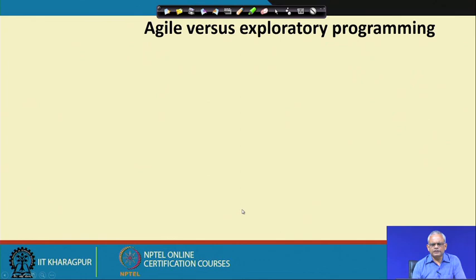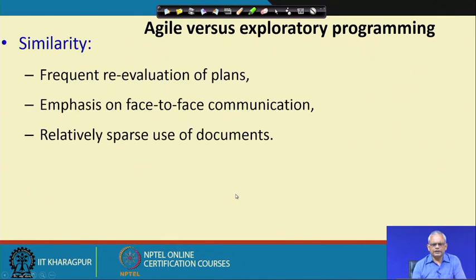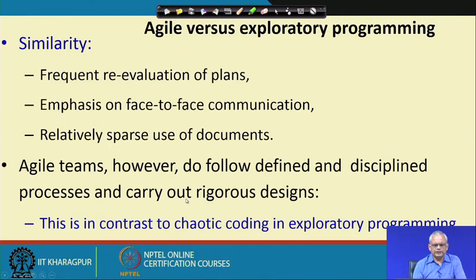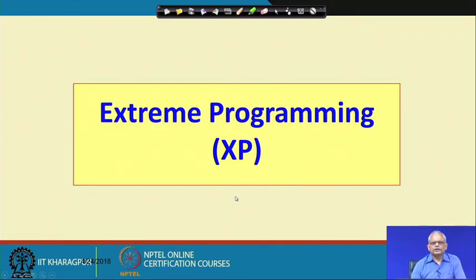Compared to exploratory programming, Agile has many similarities — face-to-face communication, discouraging documents, frequent re-evaluation of plans. But in contrast to the exploratory model, Agile has a system: every increment is developed according to a plan with design and coding following a waterfall model at the increment level, contrasting with the chaotic coding of exploratory programming. We stop here, and in the next lecture we look at one of the Agile development techniques — Extreme Programming. Thank you.